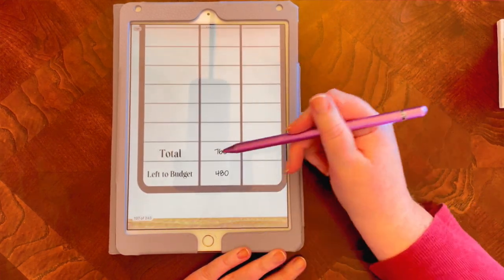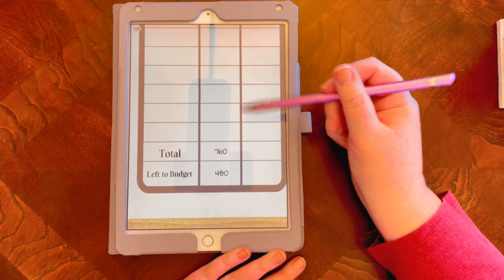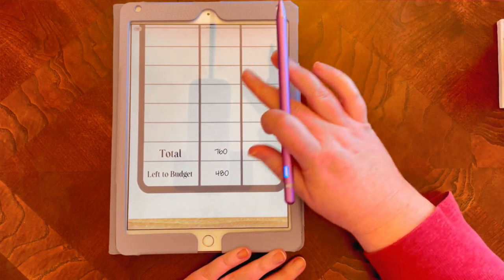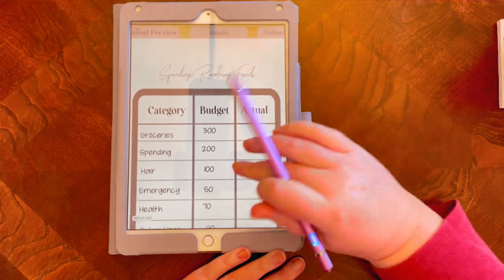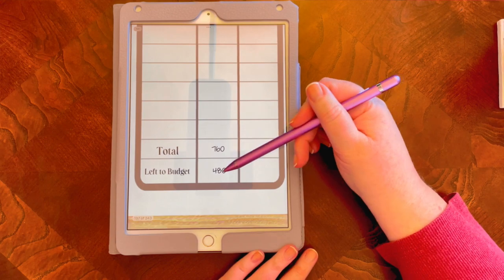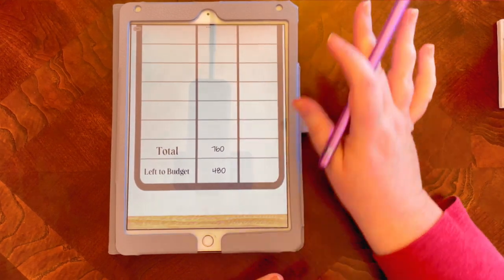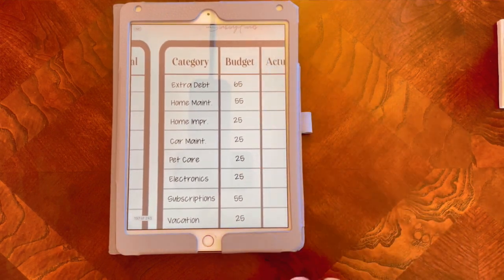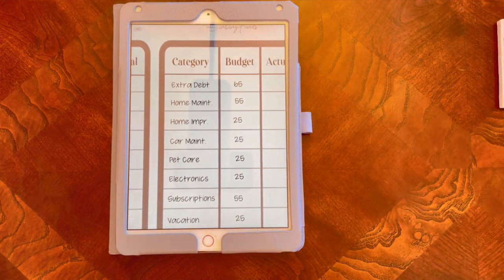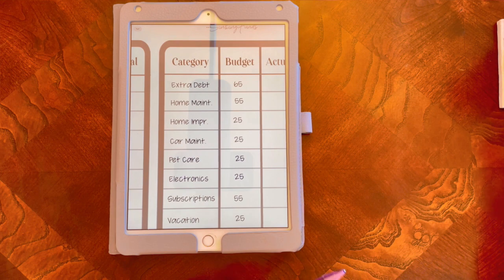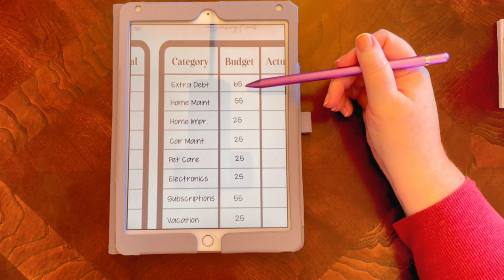Okay, so my fixed spending and revolving funds will come to $760, which leaves me $480 to stuff in my sinking funds, which is a lot more than I normally have. So I'm grateful for that. And when I bulk some of these up, I have that opportunity.